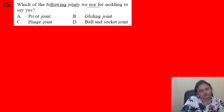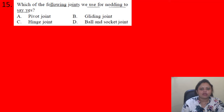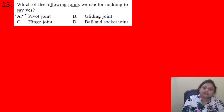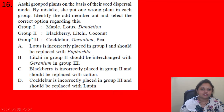Next question: Which joint do we use for nodding to say yes? Options: A) pivot joint, B) gliding joint, C) hinge joint, D) ball and socket joint. When we nod to say yes, we move our head up and down in that rotational manner — that is the pivot joint. So the correct answer is option A: pivot joint.